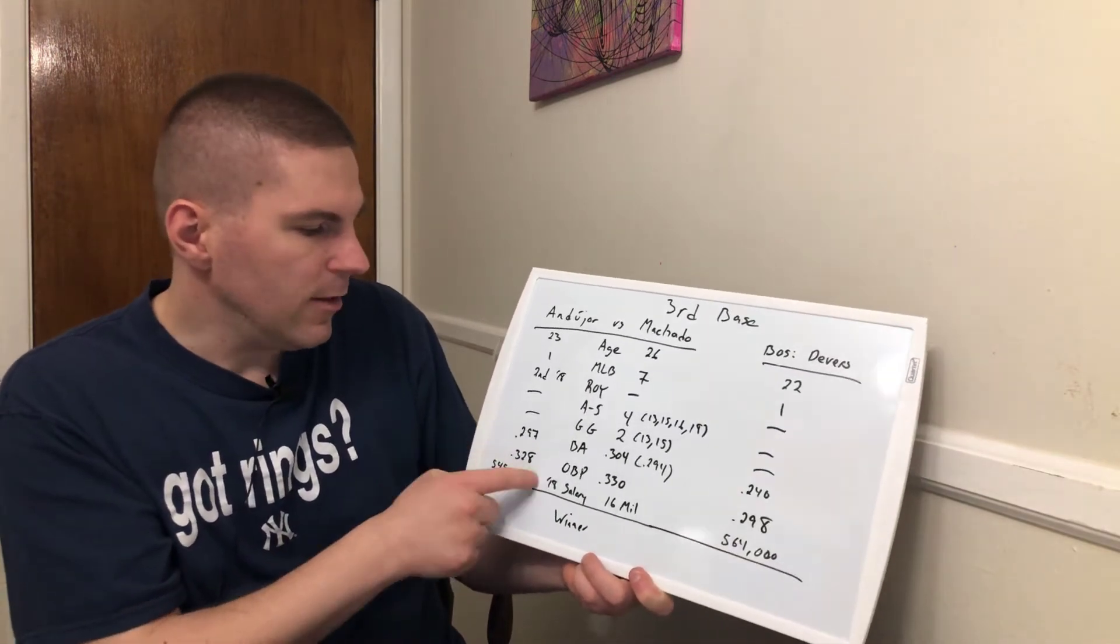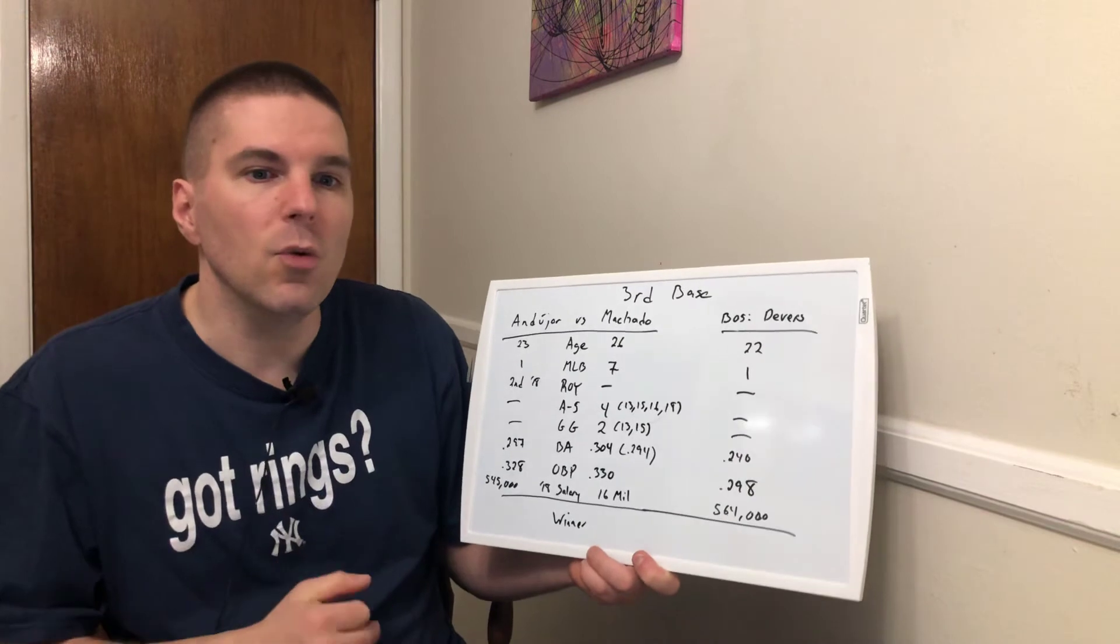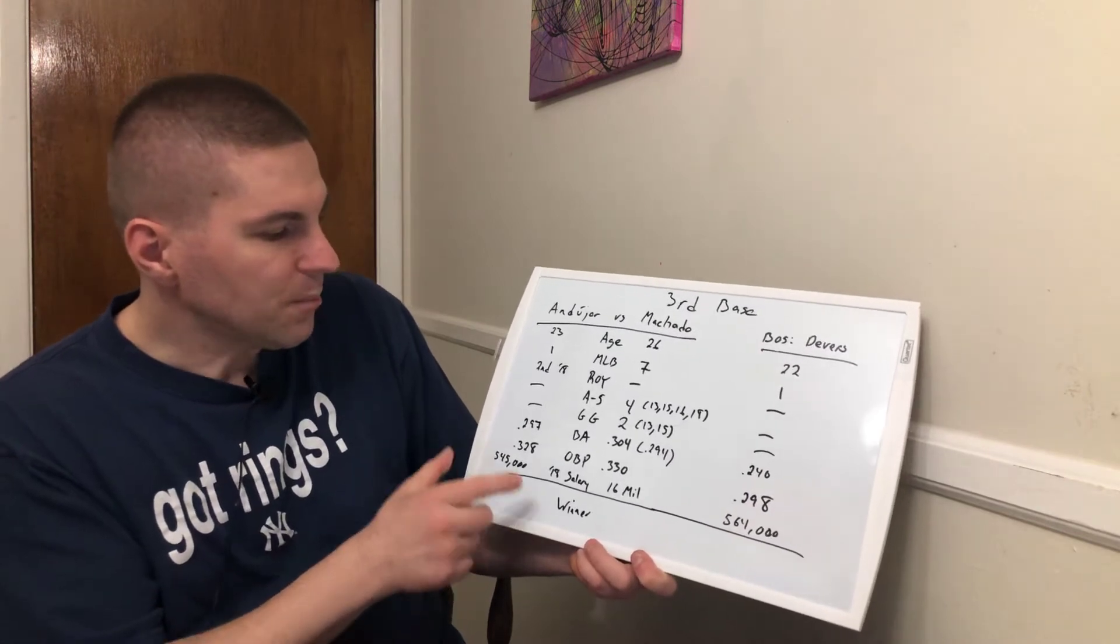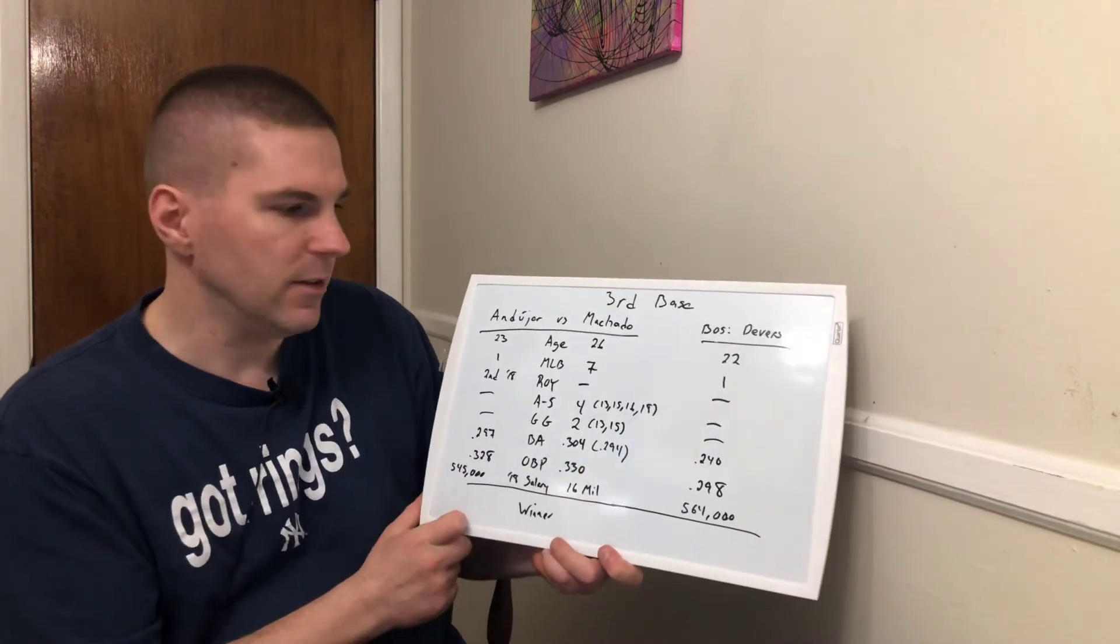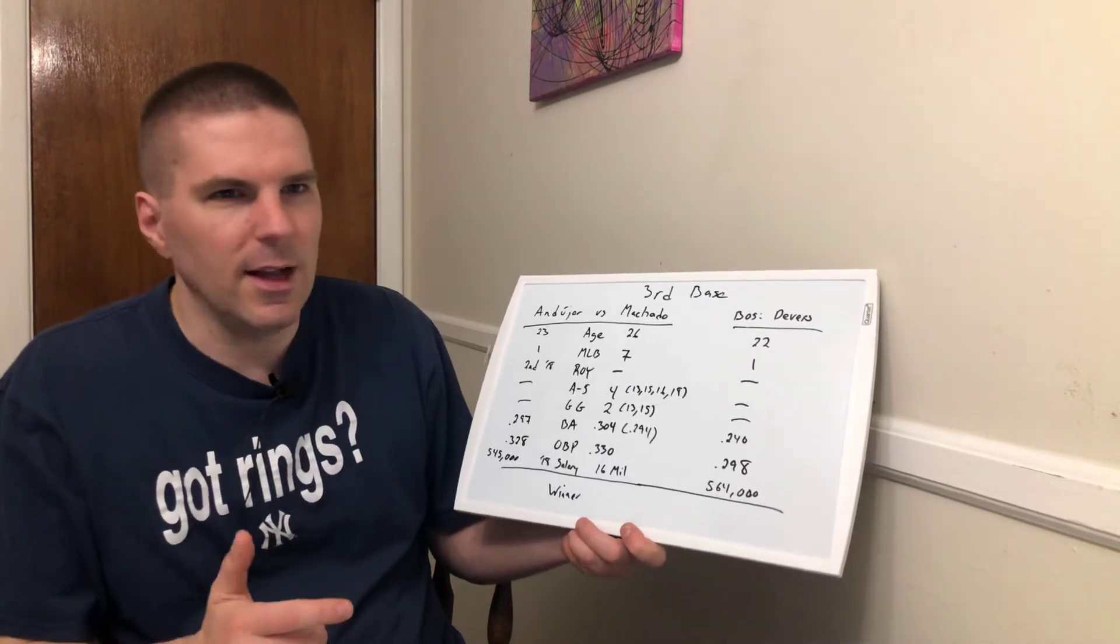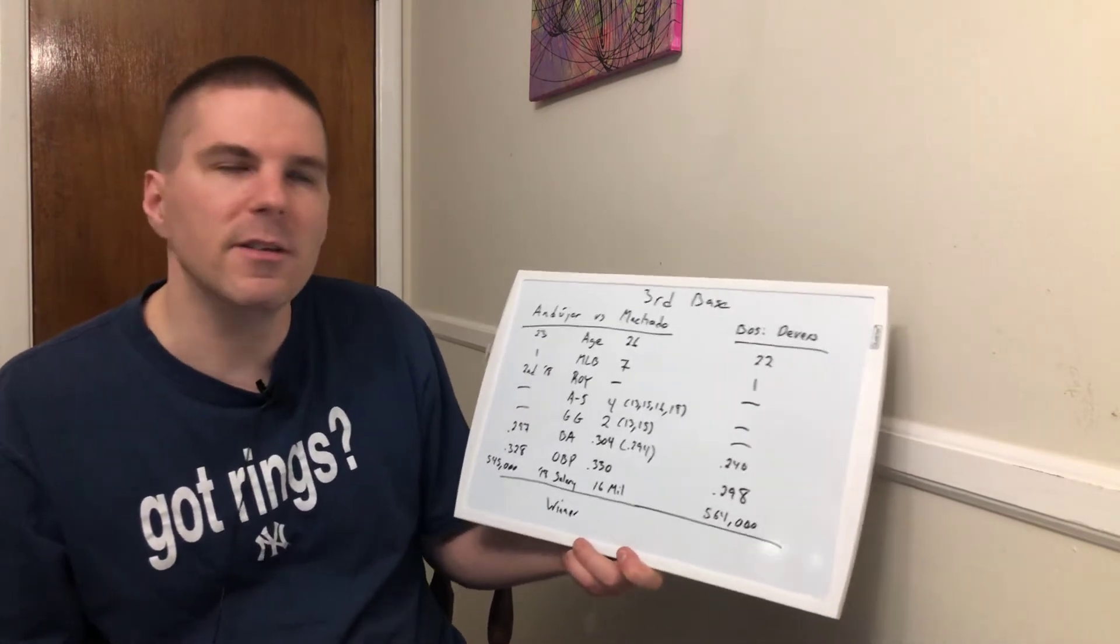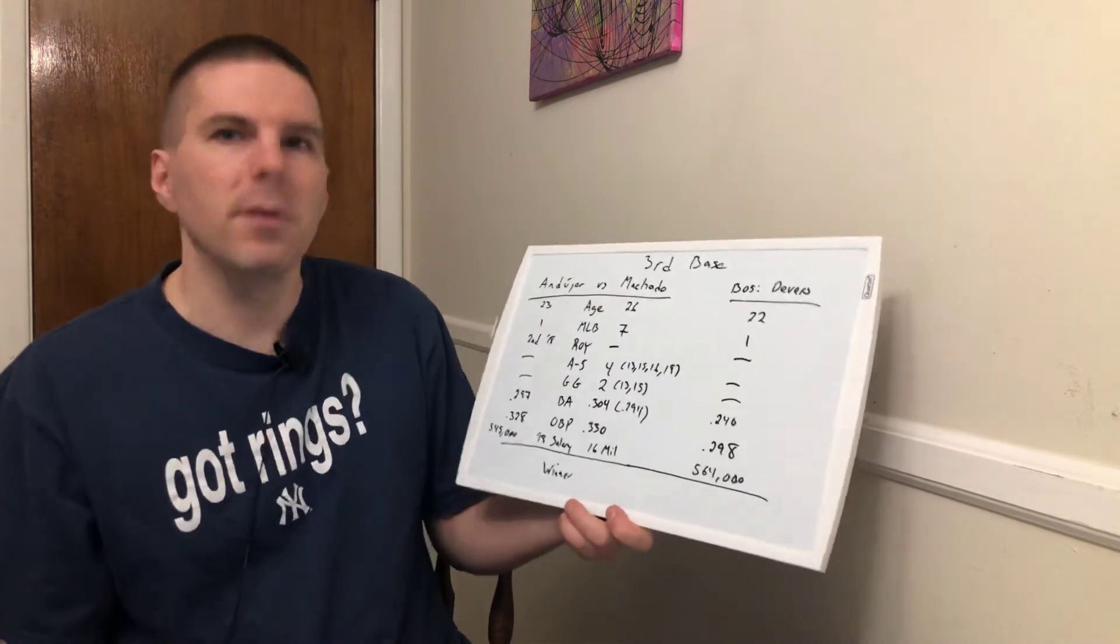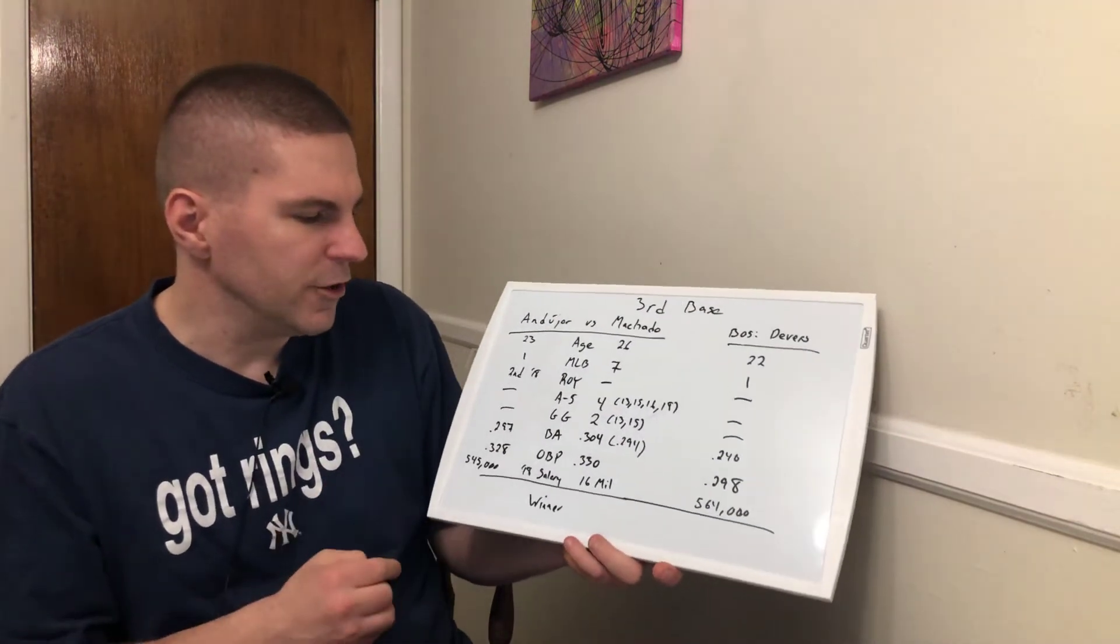On-base percentage, the all-important on-base percentage. Can you get on base? Can you bring people in? Can you make it tough on the defense? His first, last year, Andujar finished two notches at .328 below Machado at .330. Whereas, Devers is down there at .298. Doesn't exactly make me shake when he's up to bat. Will he get hits? Yes. Can he be a nuisance? Yes. But when you're playing your arch-rival, who isn't a nuisance? Even the worst player, you're like, don't give him any chances.